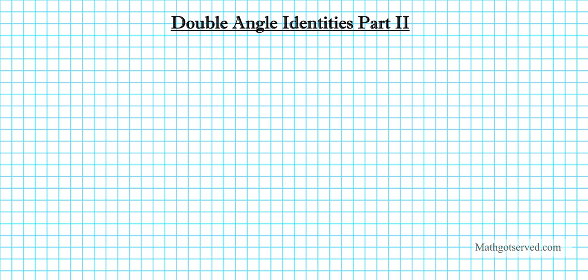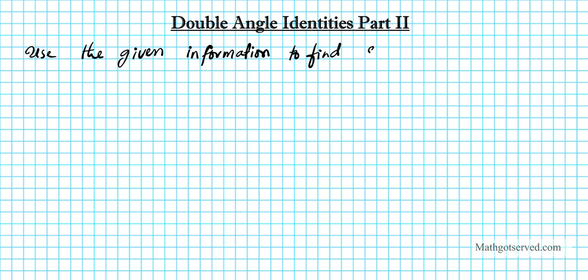Good day students, welcome to part 2 of the double angle identity series. Let's go ahead and write down the instruction for the two examples we are going to consider: use the given information to find sin 2θ and tan 2θ.